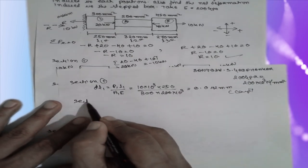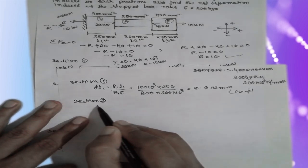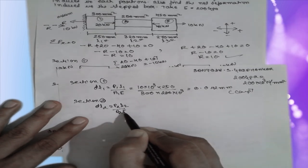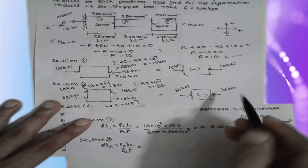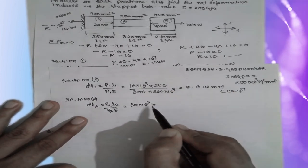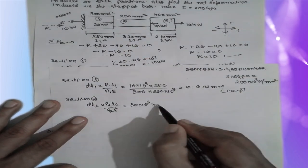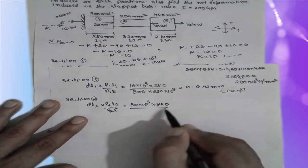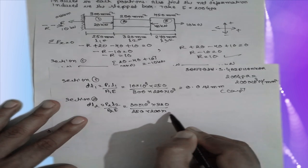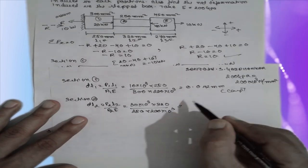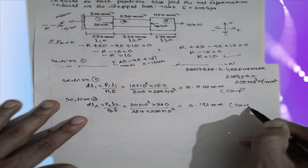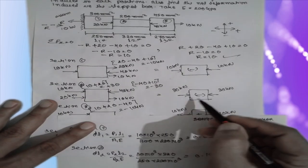For section 2: Delta L2 equals P2 times L2 divided by A2 times E. P2 is 30 into 10 raised to 3 Newtons, L2 is 320 mm, divided by area 250 mm squared and E equal to 200 into 10 raised to 3 Newton per mm squared. The answer is 0.192 mm, and it is compressive.